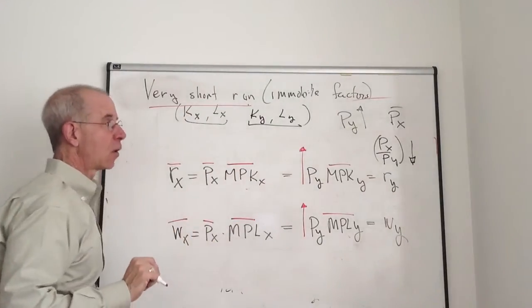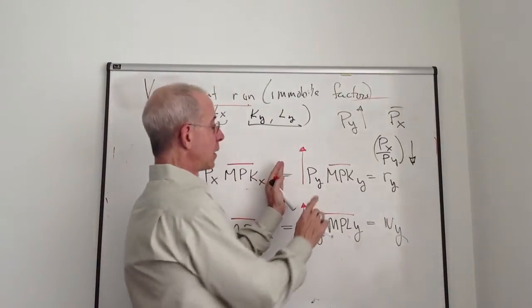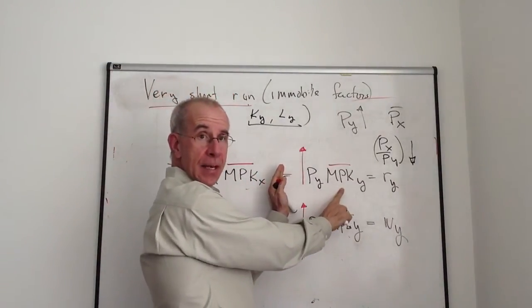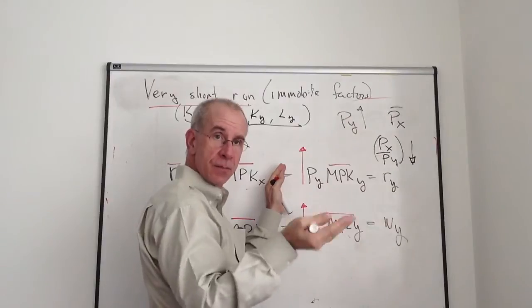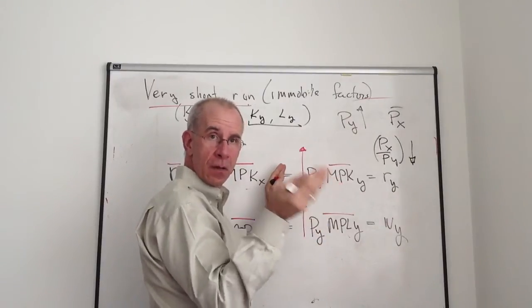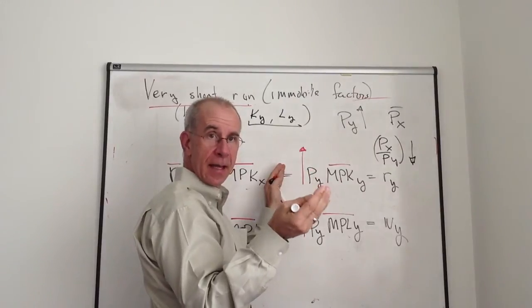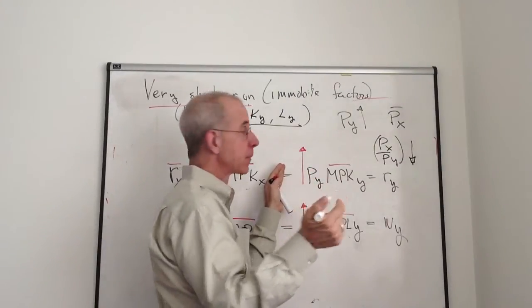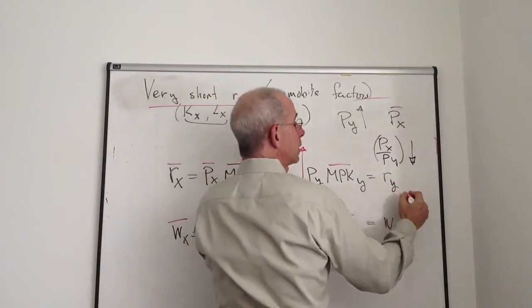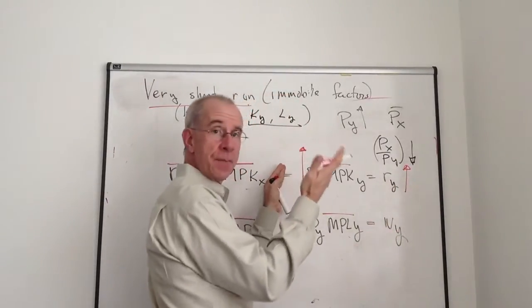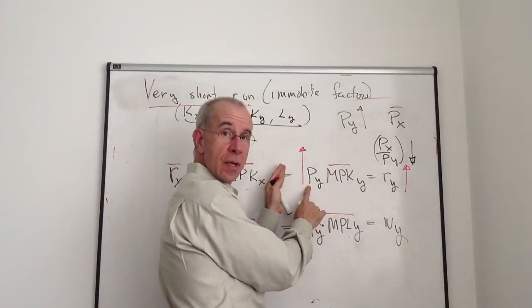Let's take a look over here at the Y sector. Forgetting what's over here on the left, marginal productivity of capital hasn't changed, but the price of Y has gone up. So that's going to tend to bid up the value of having a unit of capital in that firm. They're more valuable. And if we've got perfect competition in the capital market, that's going to tend to bid the payments to capital up by the same percentage as the price rise in Y.